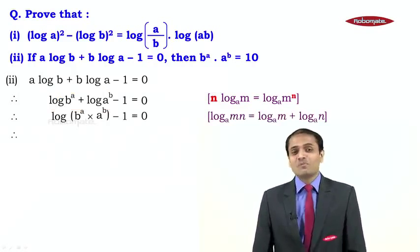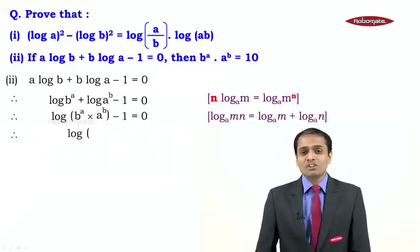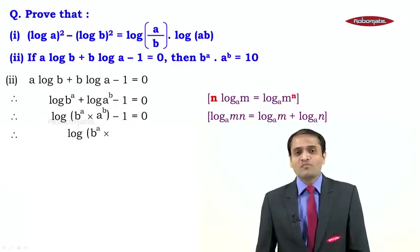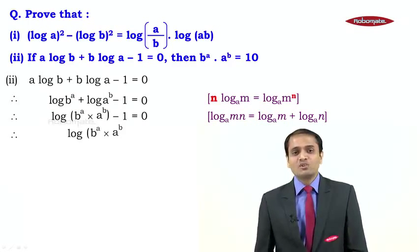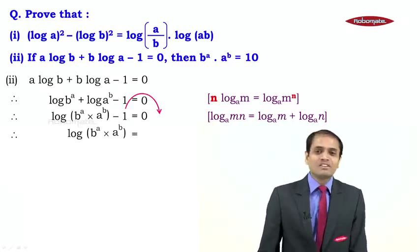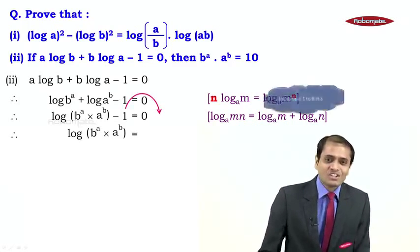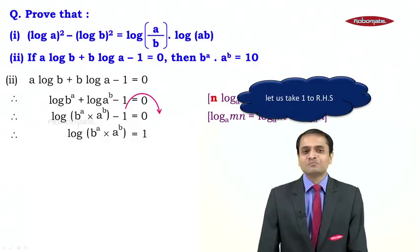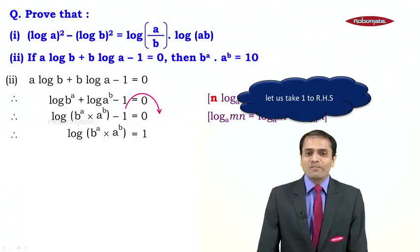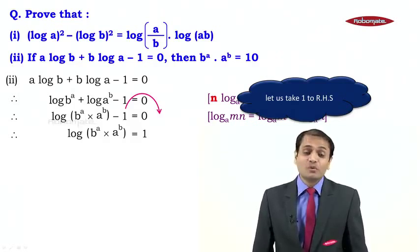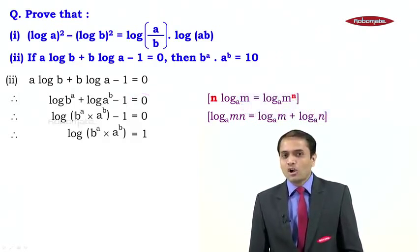In the next step, we carry the −1 to the RHS, where it becomes +1. So we now have log(b^a · a^b) = 1. We have a single log on the LHS, but the RHS is just 1 — not yet a log — so we need to express 1 as a logarithm.